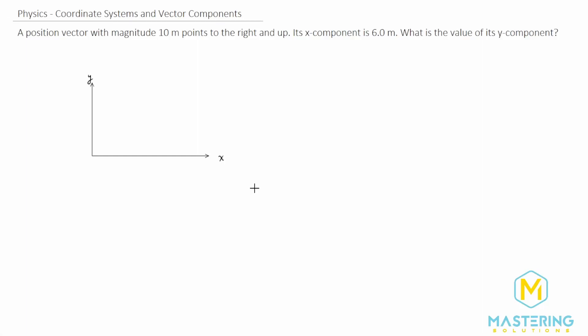Welcome to Mastering Solutions. In this coordinate systems and vector components problem, they tell us that a position vector with magnitude of 10 meters points to the right and up.